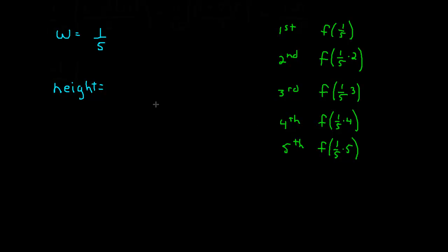So what is a general expression we can use to talk about the height of any one of these rectangles? The height of any rectangle is going to be f of the width multiplied by the number of the rectangle I'm on. If I want the height of the second rectangle, I multiply the width by 2; the third, I multiply by 3. So we can write 1 fifth times i, where i is my index and i takes on values from 1 all the way to 5.